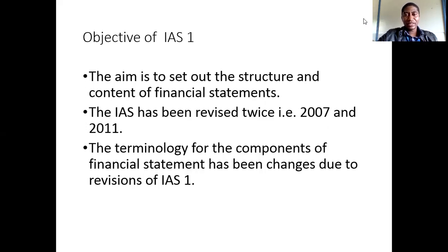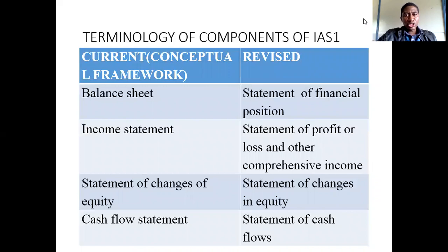In accounting, everything is standardized. We are always reviewing these standards to see any changes that can come to be. The terminology for the components of financial statements has been changed according to the revisions made to IFRS No. 1. We used to know the balance sheet — now it is known as the statement of financial position. The income statement is now known as the statement of profit or loss and other comprehensive income.